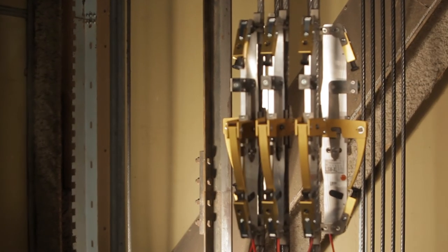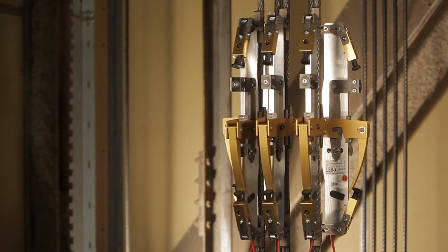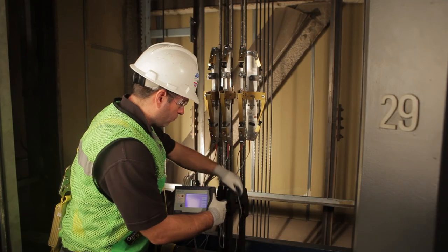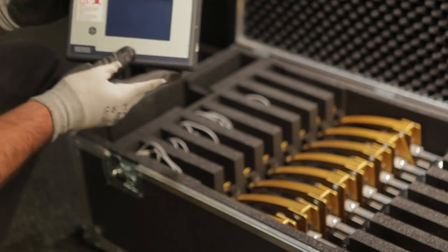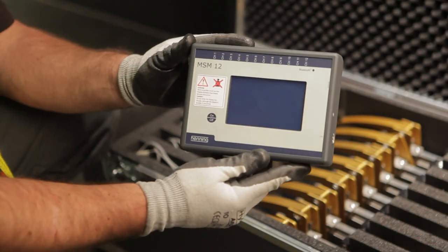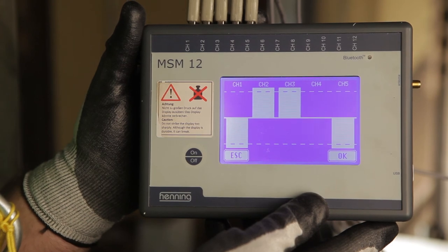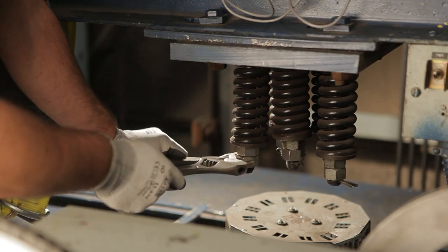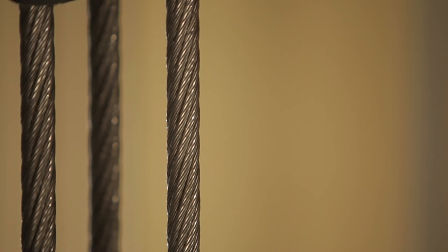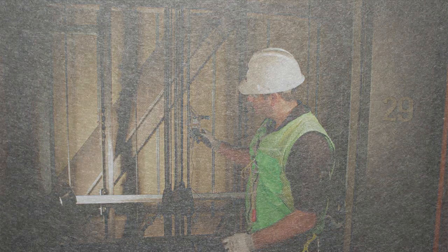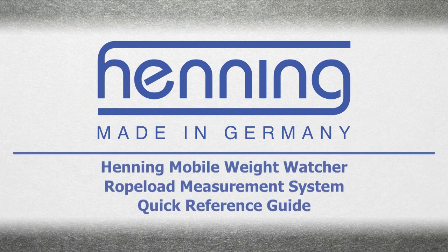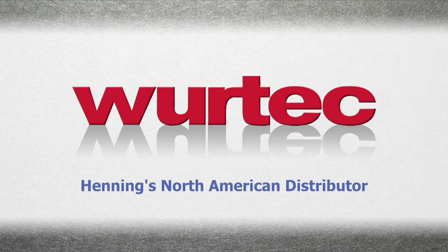Congratulations! You are now ready to use the Henning Mobile Weight Watcher Rope Load Measurement System. Following these steps and considerations will ensure that your Mobile Weight Watcher Rope Load Measurement System provides accurate and reliable measurements. Equalization will extend the life of your ropes and shivs. Equalized ropes will also achieve a smoother ride in your elevator. For more information, contact your Wurtec sales representative.